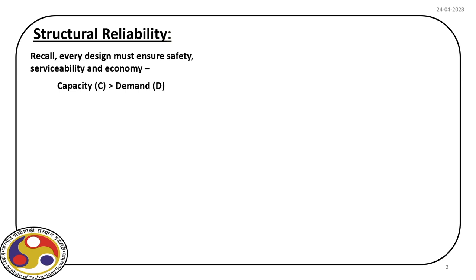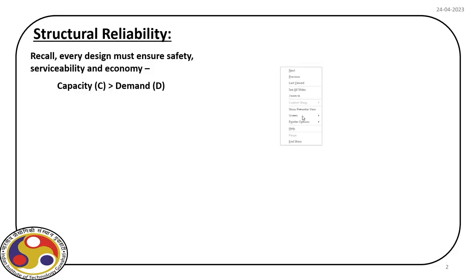Welcome back to this course. Today we are going to start our first lecture on reliability index. Till date we have discussed theory of probability and different mathematical models that we are going to use in reliability with structural design to model the uncertainty associated with this design process. When we design a structure, we actually make sure that the capacity at the section level is more than the demand. That is the basic philosophy we always follow to ensure safety, serviceability, and economy associated with the design and construction.